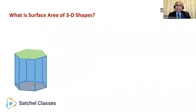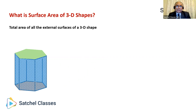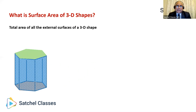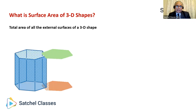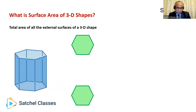First, what do we understand by surface area of a 3D shape? Simply, it's the total area of all the external surfaces of a 3D shape. So if you look at all the external surfaces of any 3D shape and add up all the areas, that's the surface area. For example, if you look at this hexagonal-based prism, what are the external faces? It has two hexagonal bases, one on top and one at the bottom.